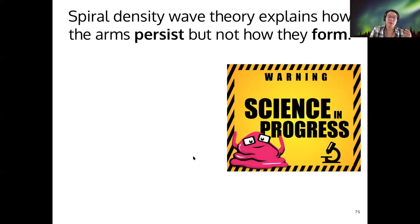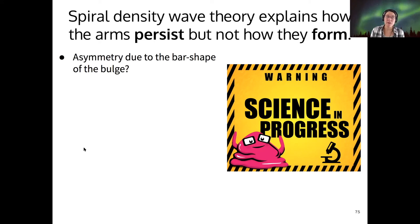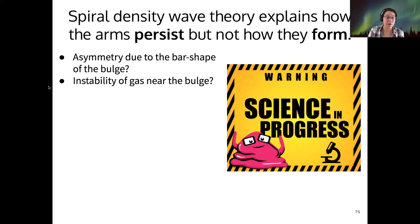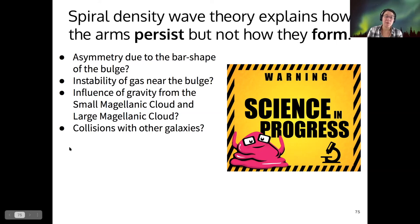The spiral density wave theory explains how the arms persist over time, but it doesn't really explain where that initial high-density region came from in the first place. There are lots of ideas: it could be that the bar shape of the Milky Way's bulge causes asymmetry in the gravitational influence on gas in the disk, triggering the spiral density wave. It could be that gas near the bulge is unstable and causes dense regions to form, propagating via differential rotation. It could also be gravity from our galaxy's companions — the Small and Large Magellanic Clouds — causing the spiral structure to be set up in the first place.